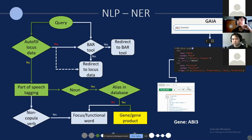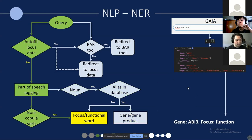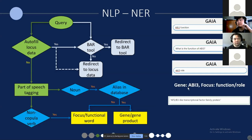If there's a match, we assume it's a gene or gene product. If it does not match, or in the case of non-copular verbs, we look at whether those words — if they're a non-copular verb or a noun not in the database — and determine those as focus words. This works for both proper and improper questions. An improper question is like "ABI3 functions" — what people typically Google. A proper question is like "what is the function of ABI3," including proper grammar. This also works for synonymous words: "function" and "role" are synonymous, and our logic allows understanding what synonymous words can be used to answer the same questions. This is part of aspect mining.